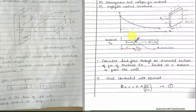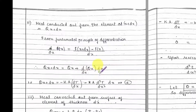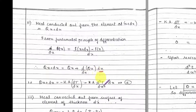The heat conducted out from the element at x+dx is qx+dx. From the fundamental principles of derivation, qx+dx equals qx plus d/dx of qx multiplied by dx. Substituting the value of qx from Fourier's law, we get qx+dx equals minus kA dT/dx minus kA d²T/dx² times dx. This is equation 2 — the heat conducted out of the element.